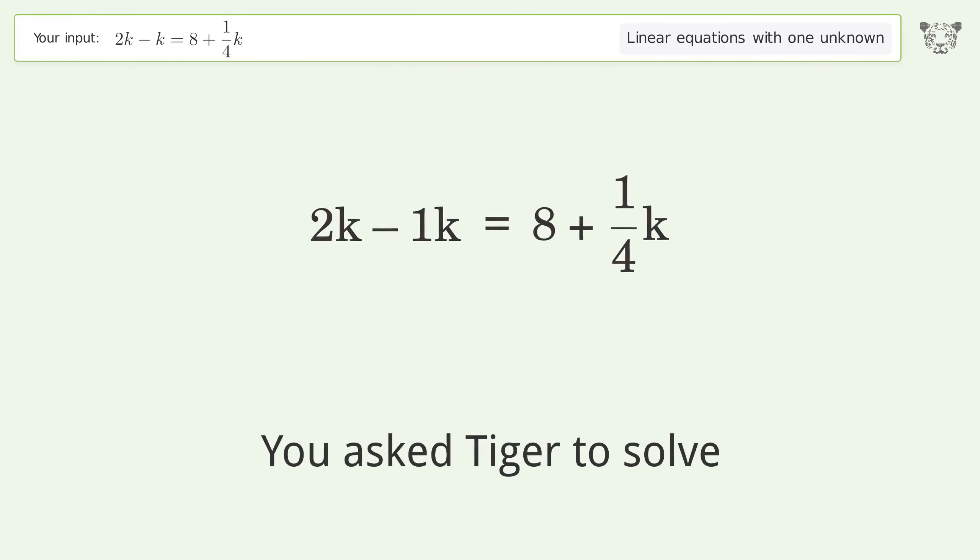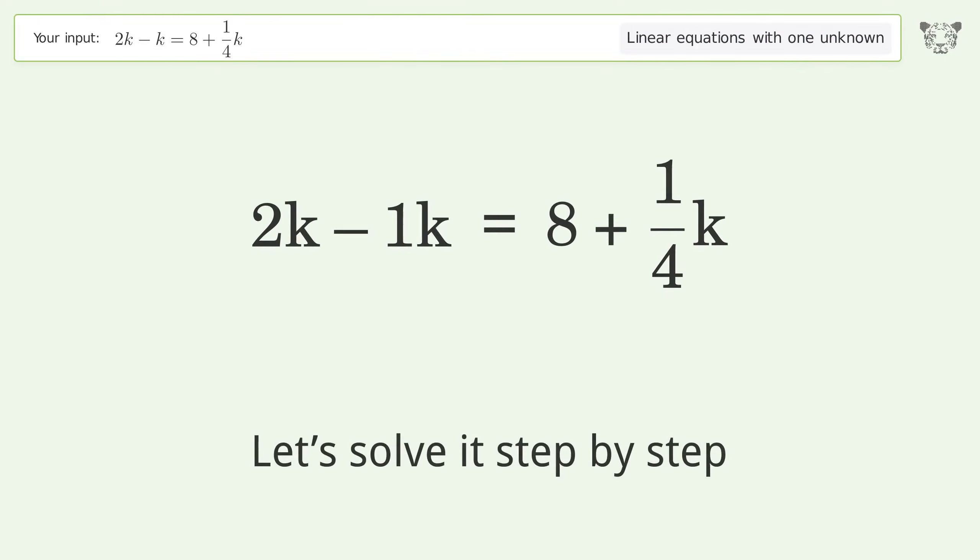You asked Tiger to solve this linear equation with one unknown. The final result is k equals 32 over 3. Let's solve it step by step. Simplify the expression and combine like terms.